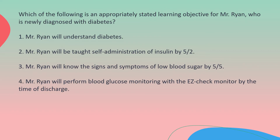Which of the following is an appropriately stated learning objective for Mr. Ryan, who is newly diagnosed with diabetes? 1. Mr. Ryan will understand diabetes. 2. Mr. Ryan will be taught self-administration of insulin by 5 halves. 3. Mr. Ryan will know the signs and symptoms of low blood sugar by 5 fifths.